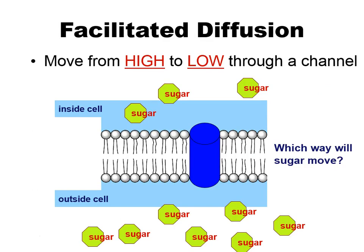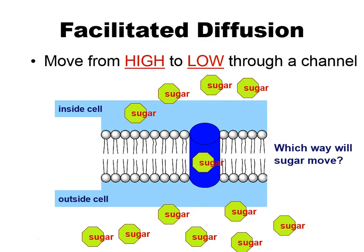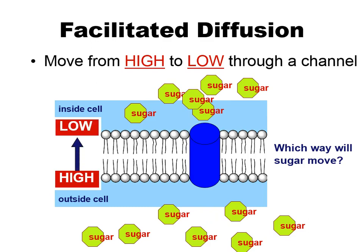Facilitated diffusion is where you get some help — to facilitate means to help. You're moving from high to low concentration, but you're using a channel or a specialized protein door. For example, which way is the sugar going to move? It's going to move into the cell — from where there's a high concentration outside to a lower concentration inside — and it continues until equilibrium is reached. It's facilitated because it had to go through a protein channel.